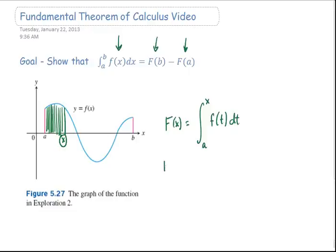And what we also want to do is maybe consider some values for this function. For example, if I consider finding the value F of A, that would be the integral from the lower limit of A to the upper limit of A underneath the graph of lowercase f of t, and we would have to say that that would equal 0.